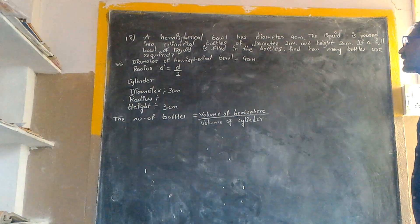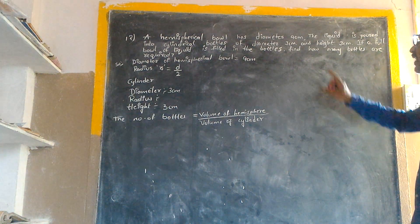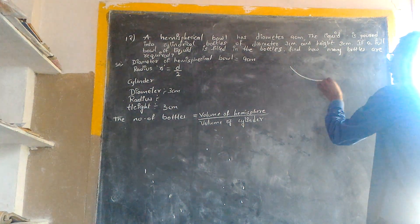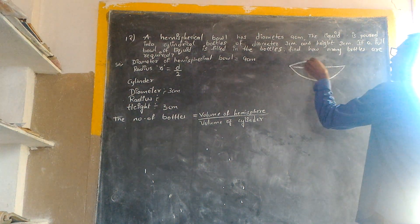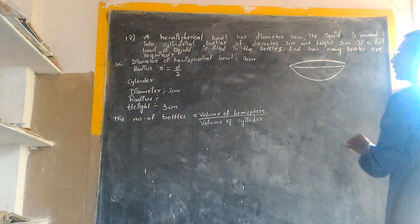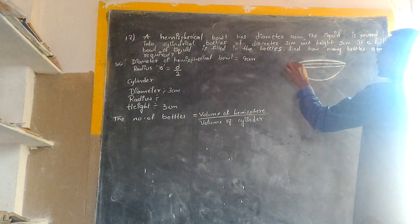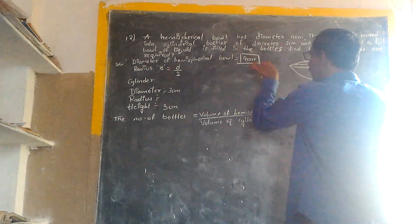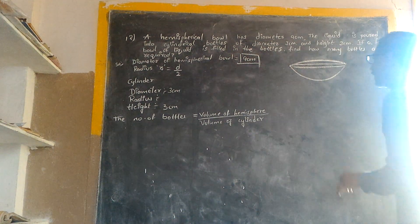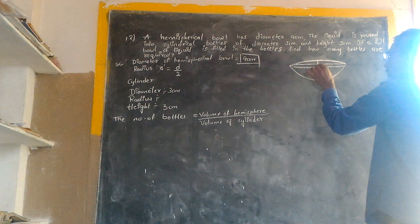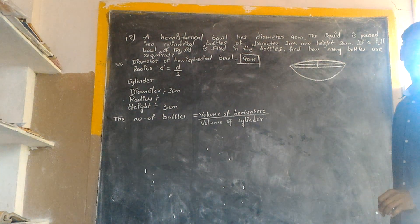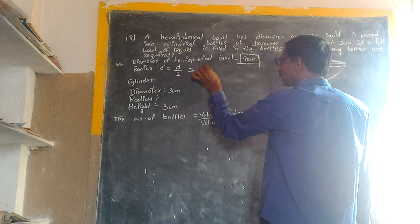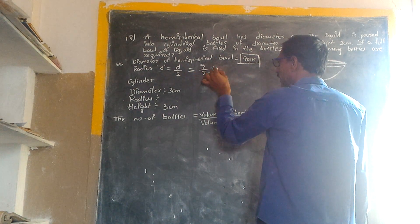A hemispherical bowl has a diameter of 9 centimeters. You can consider the radius, and the radius is equal to diameter divided by 2. That is nothing but 9 by 2 centimeters.